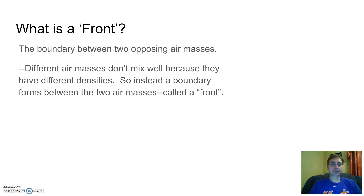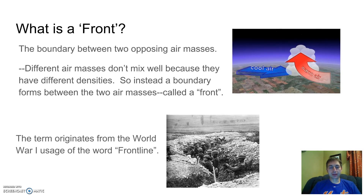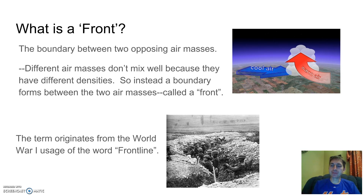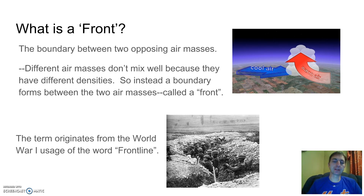We call that boundary a front. Where did they come up with the name? It stems back to discoveries around the time of World War One. In WWI, battles were fought from trenches, with two sides clashing at what was called the front line. Meteorologists said it really resembles those battling forces — one side versus the other — and the front line divides them. They thought of air masses as being in a battle, meeting and clashing at the front.